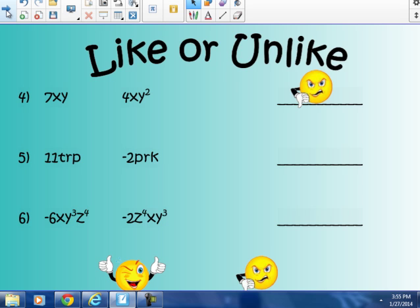Number 5, 11trp and -2prk. Well, I can see right away in number 5, I have a t in the first term and a k in the second term. They have different variables. So they are not like terms. The p and the r are similar, but if they have one variable that's not the same, then they are not like terms. So number 5, they are unlike.